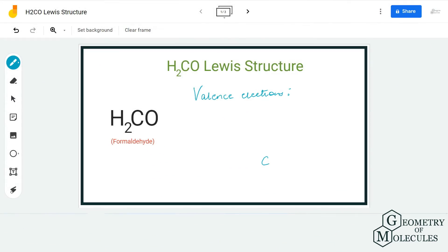Hi guys, welcome back to our channel. In today's video, we are going to help you determine the Lewis structure for H2CO molecule. It's the chemical formula for formaldehyde, and to start, we first need to know the total number of valence electrons for this molecule.